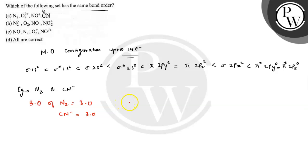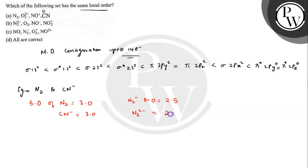If we write the bond order for N2⁻, then its bond order will be equal to 2.5. And if we write the bond order for N2²⁻, then its bond order will be equal to 2.